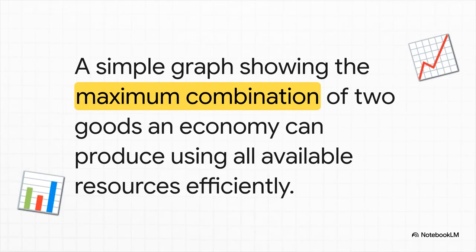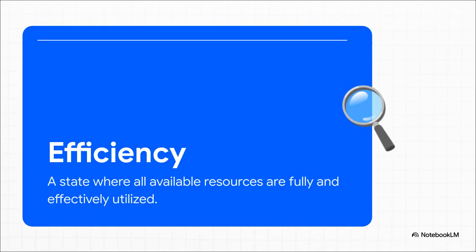So what is this thing? At its core, the PPC is just a graph that shows you the maximum combination of two different goods an economy can possibly produce. That is, if it's using all of its available resources as efficiently as possible. You should think of the curve itself as a kind of frontier. It represents the absolute limit of what that economy can do at that moment.